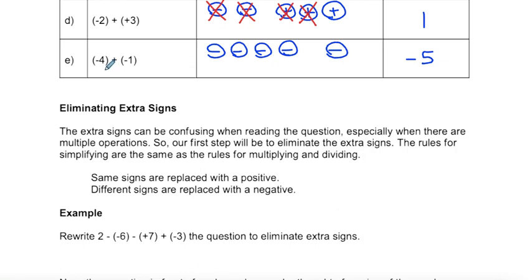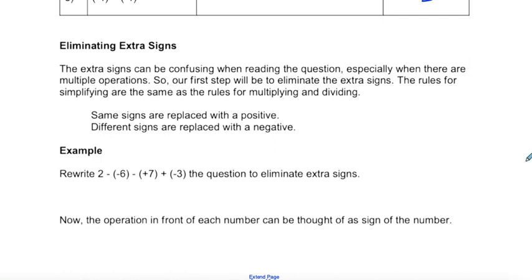The rules for simplifying are the same as the rules for multiplying and dividing: if they have the same sign, they're replaced with a positive; if they have different signs, they're replaced with a negative. We look at the signs directly beside each other. So to rewrite two minus minus six minus plus seven plus negative three: the two negatives become a positive, so plus six.